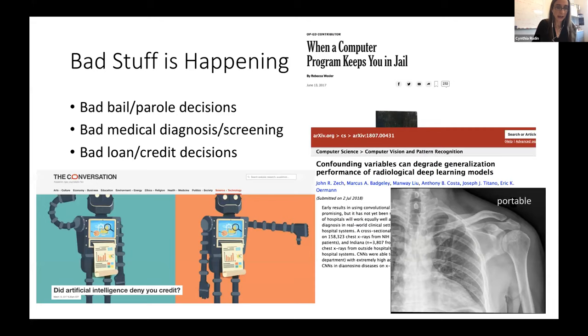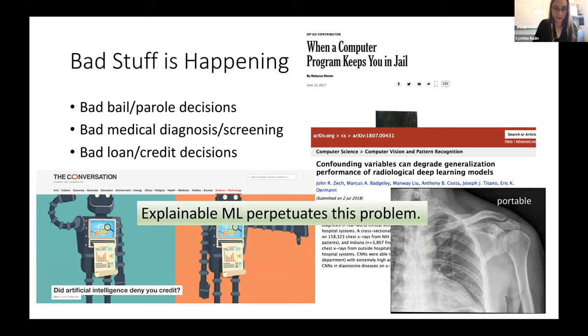We are making bad loan and credit decisions based on faulty information. And I claim that explainable machine learning actually perpetuates this problem.